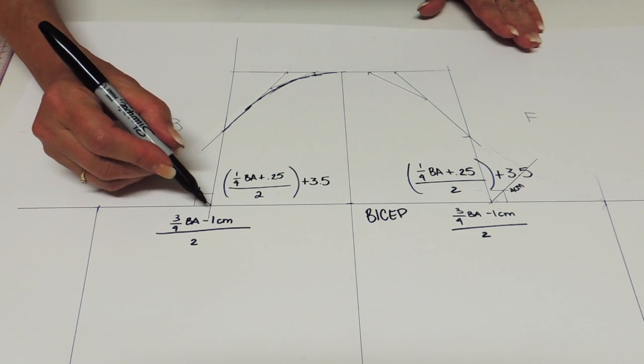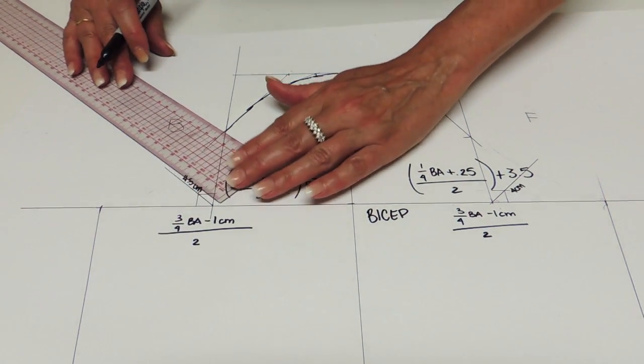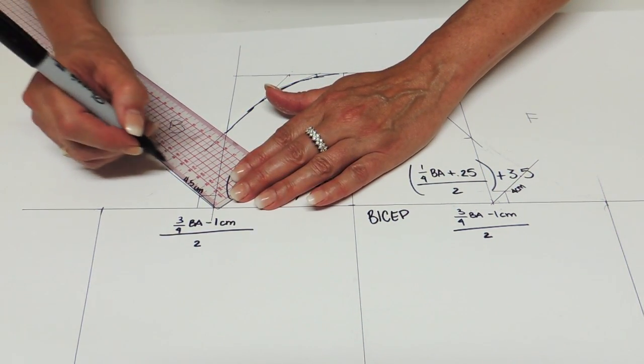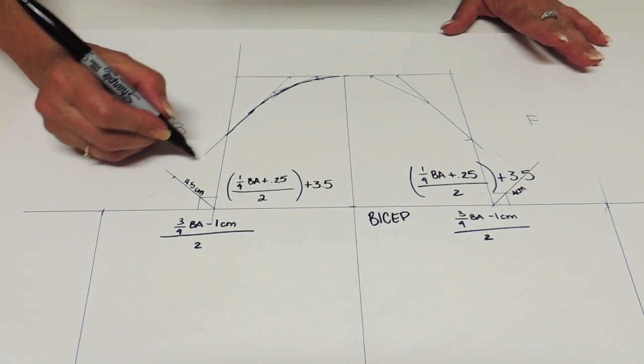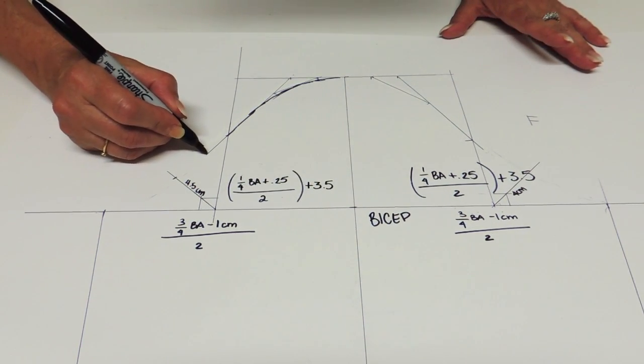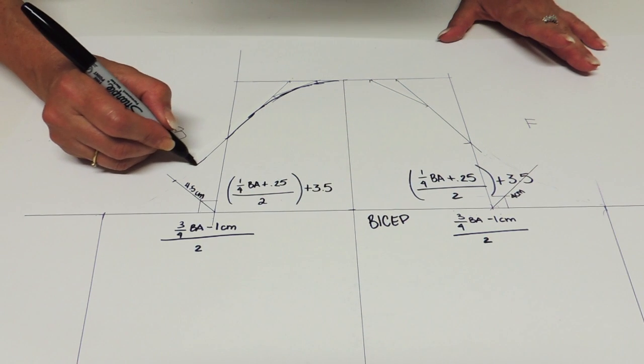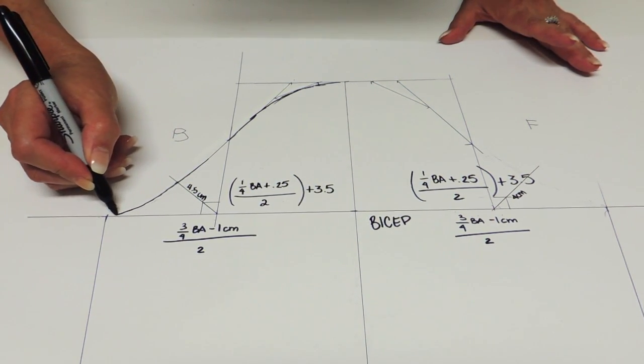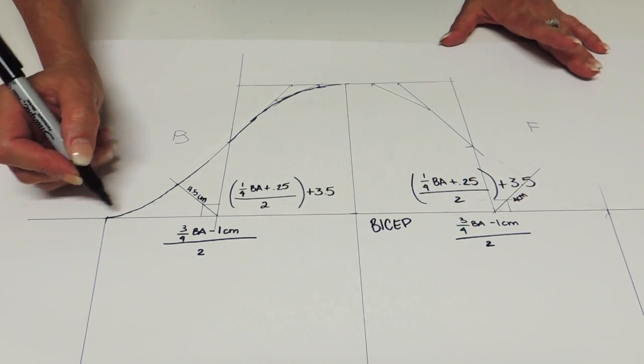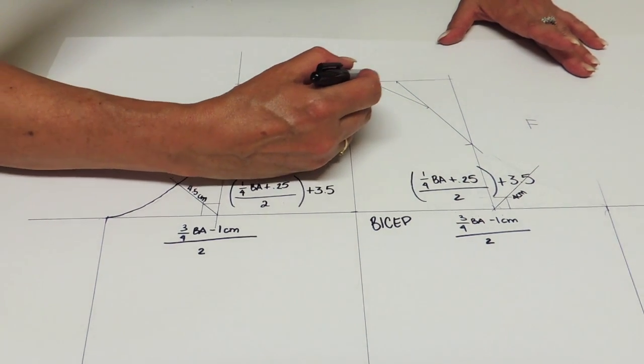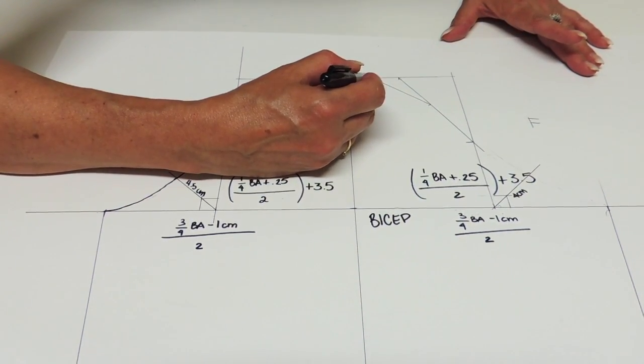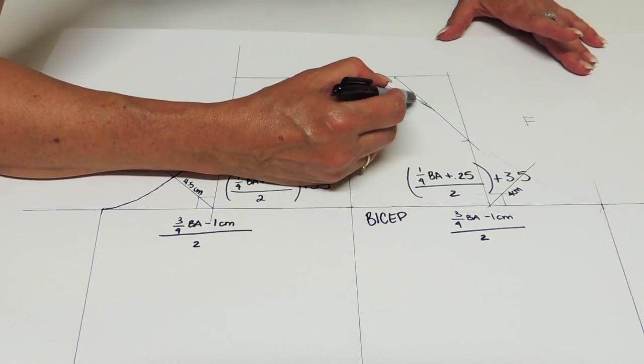And you're going to go down touching a point at about 4.5cm. About because it depends on the size of your sleeve, but just as a reference. And then go to the bicep point. Same thing on the front. So just curve and curve the two points.